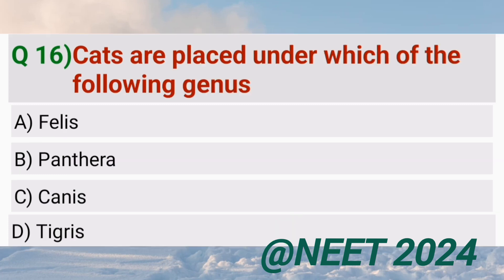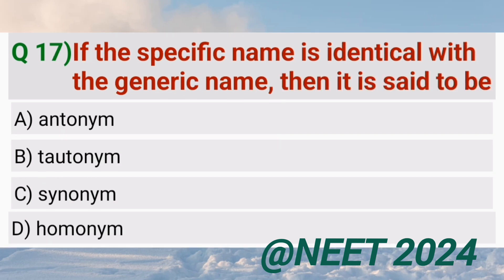Cats are placed under which of the following genus? Felis. If the specific name is identical with the generic name, then it is said to be tautonymous.